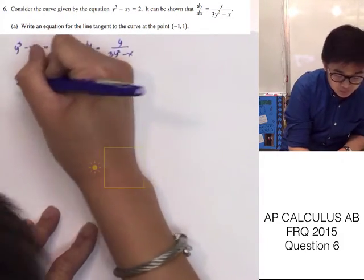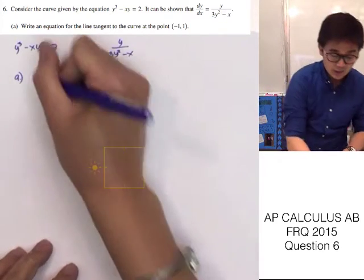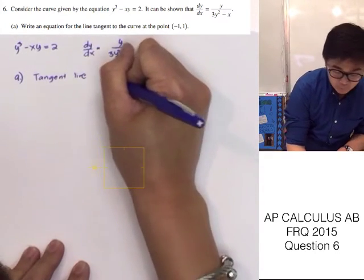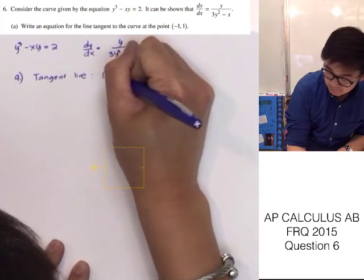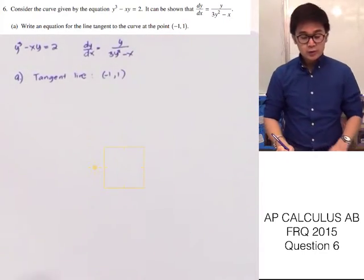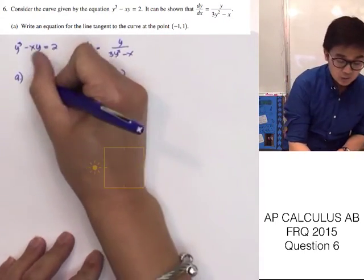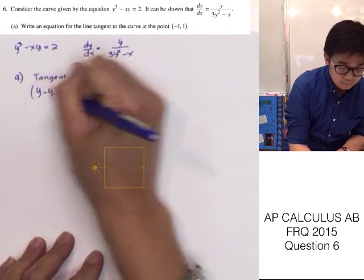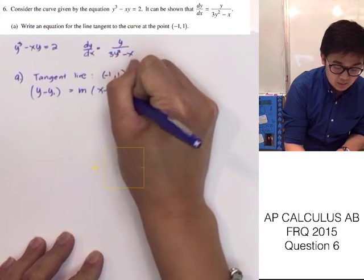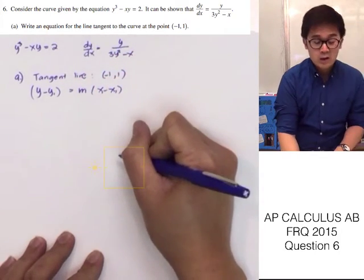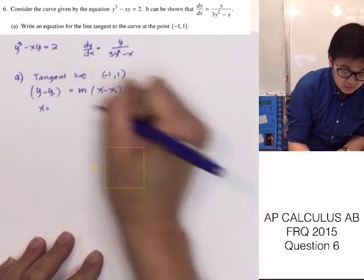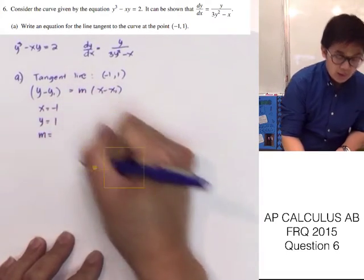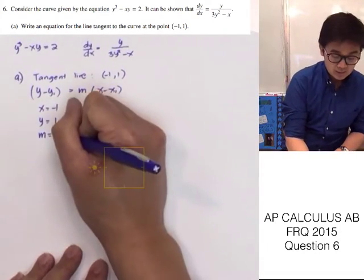To answer the first question, we are supposed to write the equation of the tangent line to the point negative 1, 1. We know that to write the equation of the tangent line, we can use the point-slope form: y minus y sub 1 equals m times x minus x sub 1, where x equals negative 1 and y equals 1.